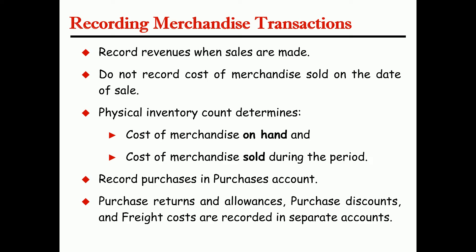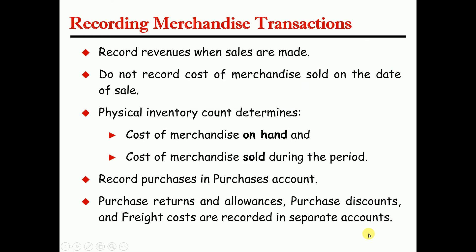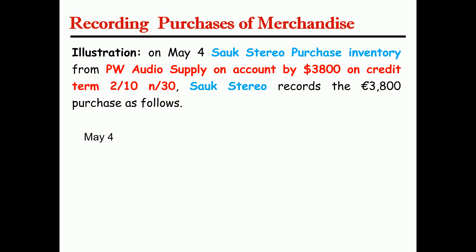This is a temporary account. In the periodic inventory system, they would use a purchase account. In the perpetual inventory system, they would use an inventory account. For example, if you want to make an example, you can assume that the buyer is making a recurring purchase of merchandise.